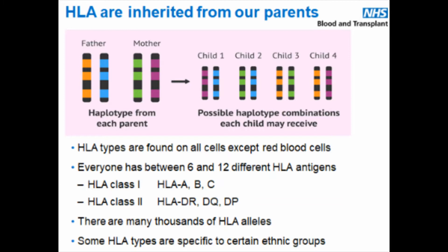HLA inheritance follows standard Mendelian inheritance from mum and dad — you have two copies, one from each parent. The HLA genes are inherited together and this is called a haplotype, so you get one haplotype from each parent. Children have a 25% chance of having an HLA-identical sibling. Because you have two copies of each gene, you can have between six and twelve different HLA antigens — 2A, 2B, 2C, 2DR, 2DQ, and 2DP. You can be homozygous, inheriting the same antigen from both parents, which is why you get the variation between six and twelve.